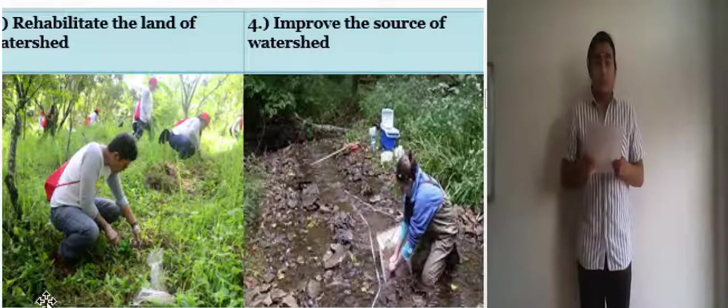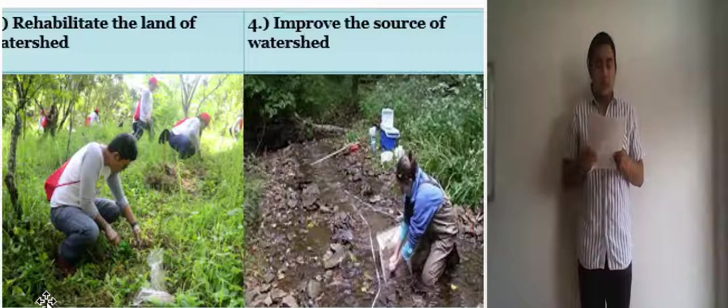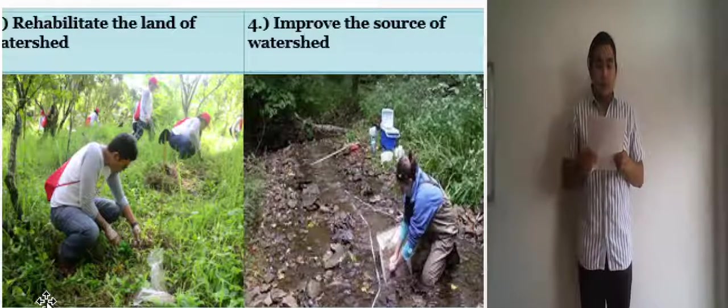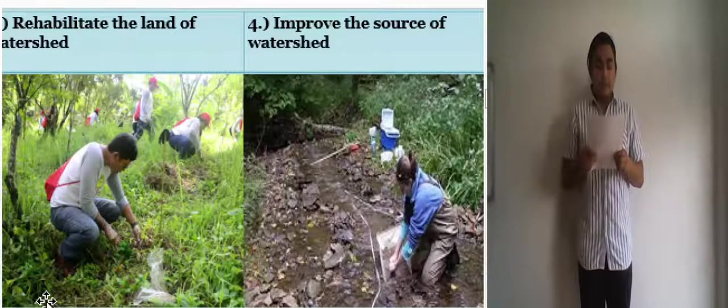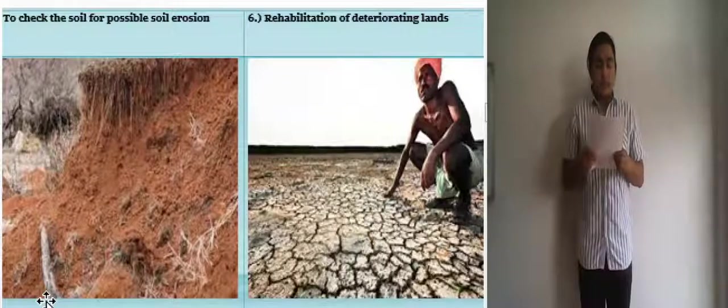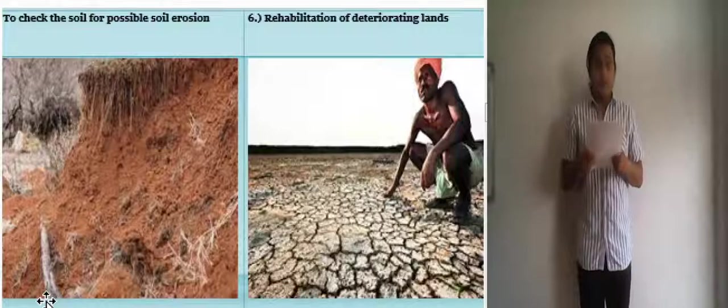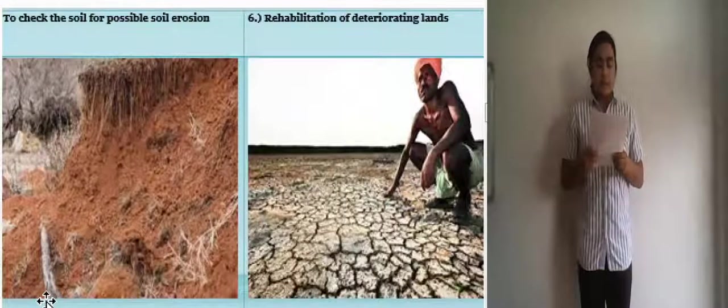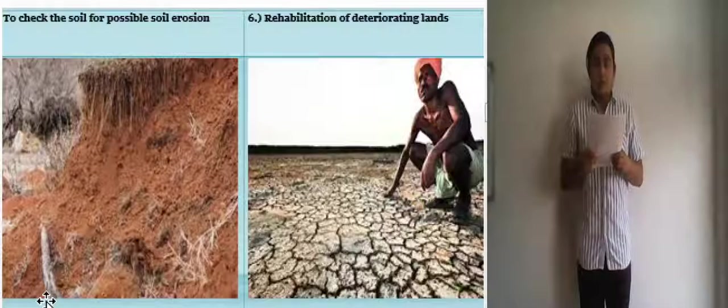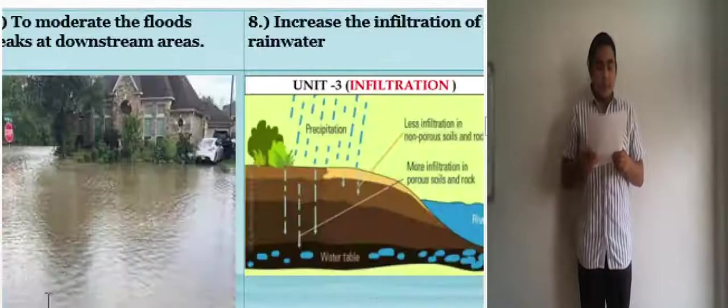Also to control the pollution. The fourth one is to improve the source of watershed. To protect and enhance the water resource originating in the watershed. The fifth one is to check the soil for possible soil erosion. To reduce the effect of sediment yield on the watershed. The sixth one is the rehabilitation of deteriorating lands. Lands that are in a state of breaking down must be taken care of before it turns into waste.